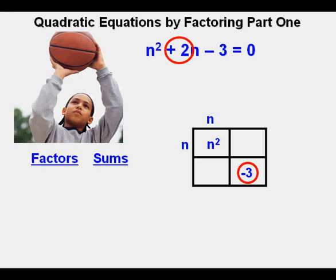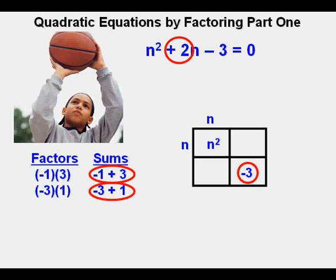A systematic approach to finding the factors is to create two columns, the first one for the factors of that number in the lower right corner, in this case negative 3, and another column for a list of sums of those factors. The only two combinations of integers to get negative 3 are negative 1 times 3, or negative 3 times 1. We list the factors in the factors column. The next step is to get the sums of the two factors and place them in the column under sums.